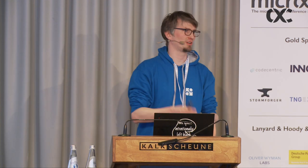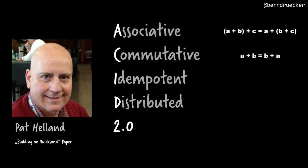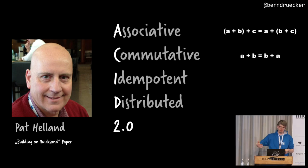Pat Helland coined another term — ACID 2.0 — applications have to be Associative, Commutative, Idempotent, Distributed. Associative and commutative basically means if you have a message-driven system, you shouldn't rely too much on the order of messages. If they can be out of order and you can work with that or detect it, you build a much more robust system. This may change with event logs like Kafka, which can guarantee order for local things, but overall getting rid of the need for ordering is a good design decision.